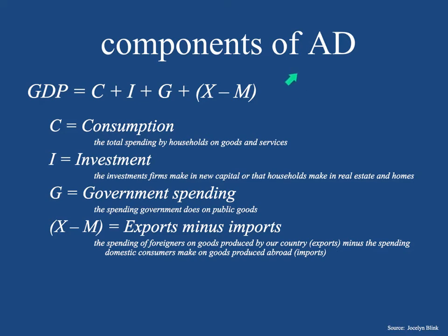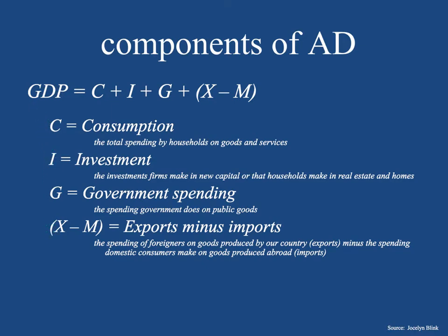So what makes up aggregate demand — the components of aggregate demand? Aggregate demand can be expressed as GDP, which equals consumption plus investment plus government spending plus exports minus imports. And if you saw the video on gross domestic product, you saw this exact same formula — you could just cross out GDP and put AD, and you have the same exact calculation.